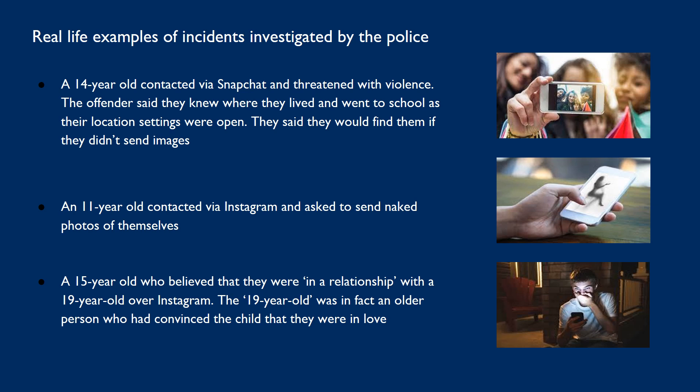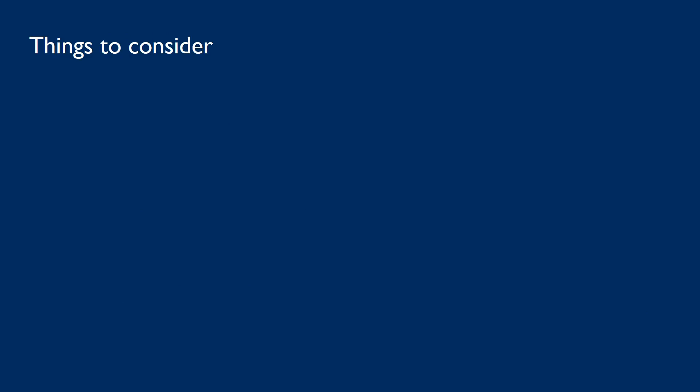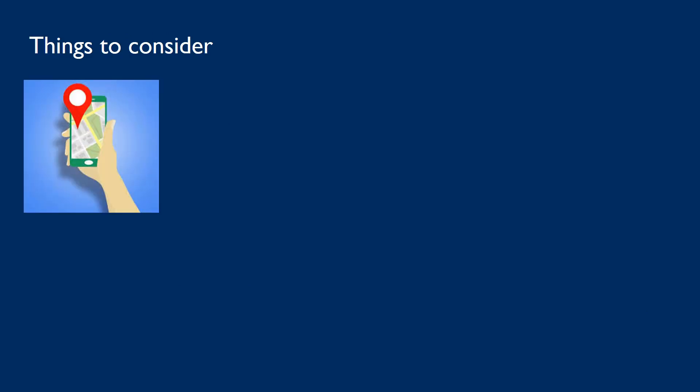These examples are just some of those dealt with by the police up and down the country. This is why it's so important that we as adults try to keep informed around the ever-expanding world of social media and the internet. There are things we can consider to keep our young people safe and to reduce the risk of harm.